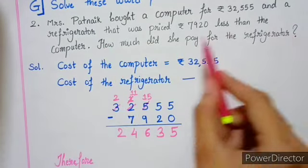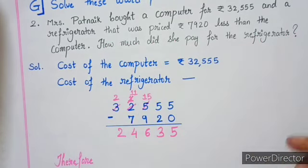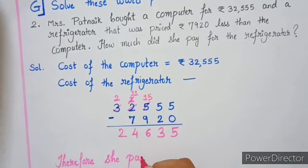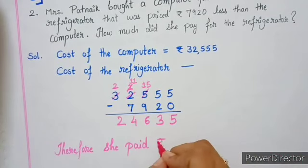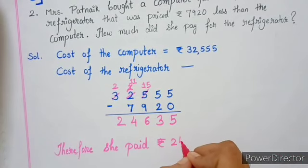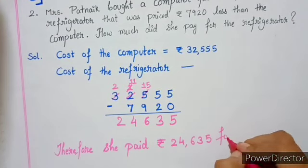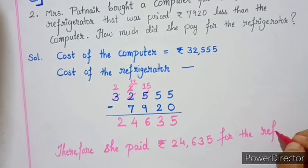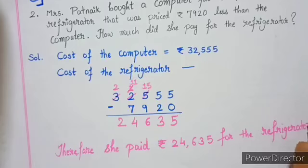The last line is always based on what has been asked at the end of the question. See what is the question: How much did she pay for the refrigerator? So therefore, she paid, don't forget to put rupees sign, Rupees 24,635 for the refrigerator.